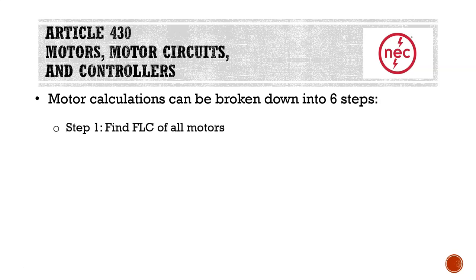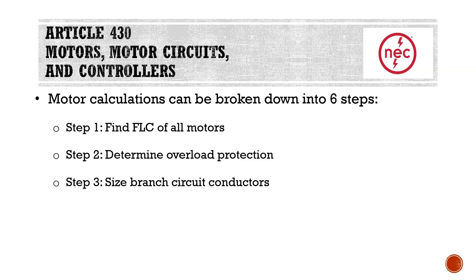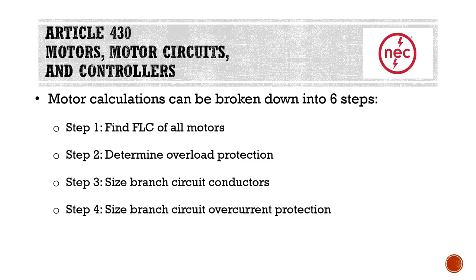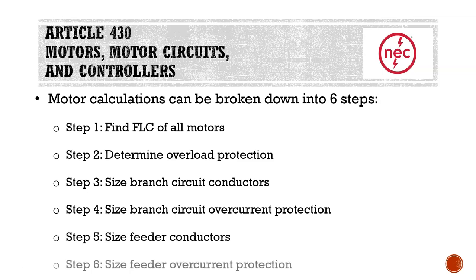The six steps are: step one, find the FLC of all the motors; step two, determine the overload protection if needed for the motor; step three, size the branch circuit conductors; step four, size the branch circuit overcurrent protection; step five, size the feeder conductors; and step six, size the feeder overcurrent protection. We're doing these in a logical order because for some steps you have to complete them in sequence. You have to do step one before step four, and step four before step six. With the exception of step one, you must do step one before any of the others.